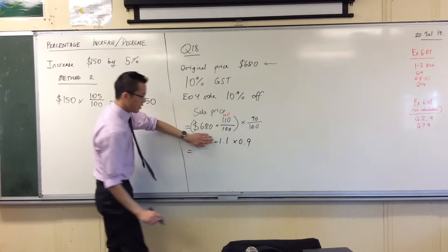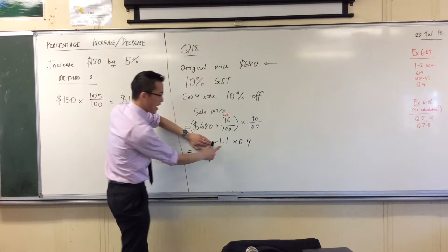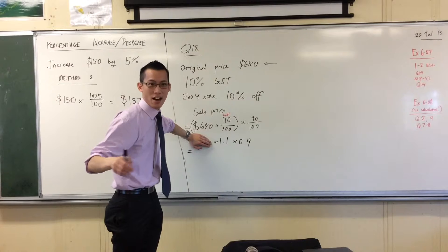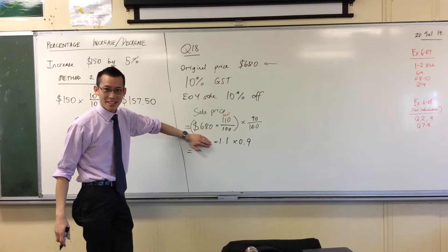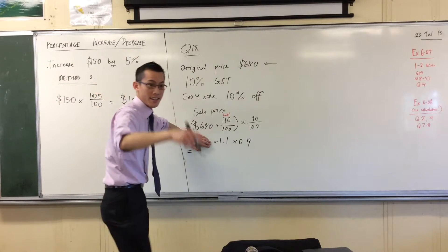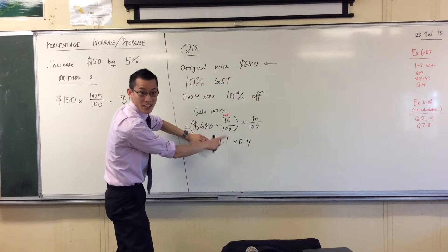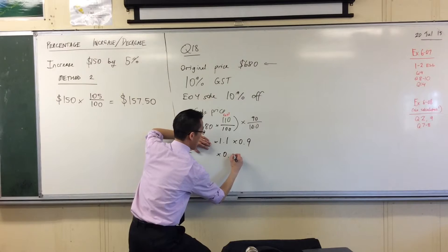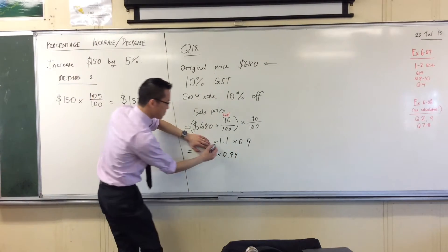So now before I get on to this 680, just forget about the 680 for a second. What's going to happen here? All right, reach for your calculator now. Punch it in if you haven't already. What's 1.1 times 0.9? Who's got it there? Just this, just this. Who's got it? Times, times, times. 0.99.